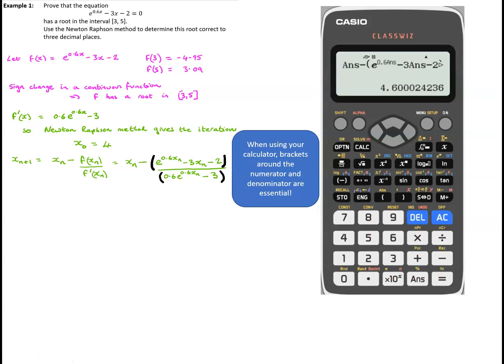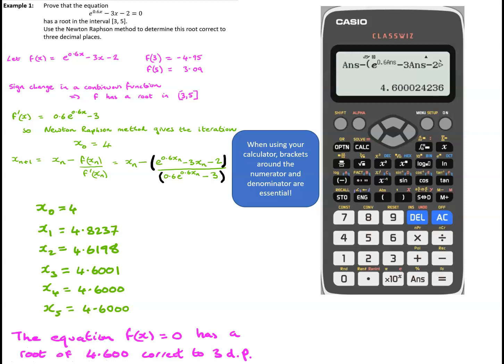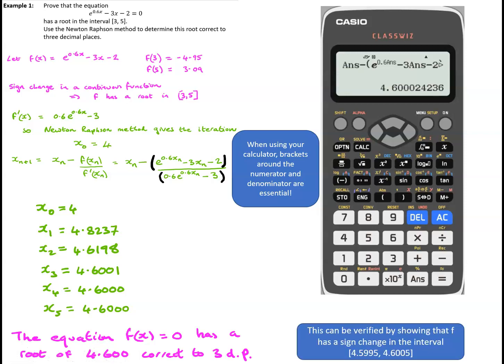Looking at the values obtained: x0 = 4, x1 = 4.8237, x2 = 4.6198, and so on. We can see very quick convergence to a value of 4.600 correct to three decimal places. We can verify that 4.600 is correct to three decimal places by checking that f has a sign change inside the interval [4.5995, 4.6005].